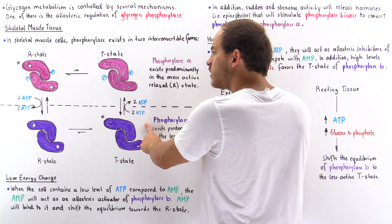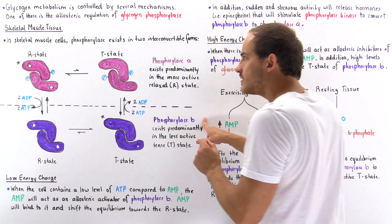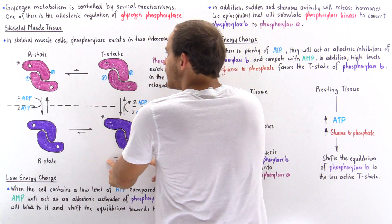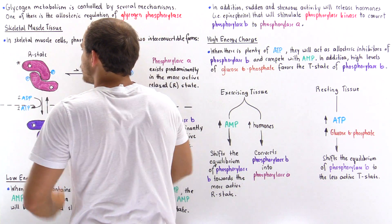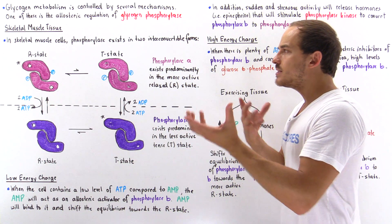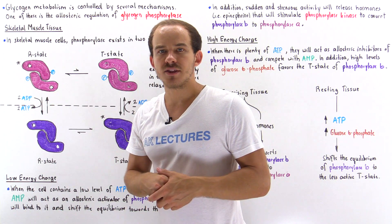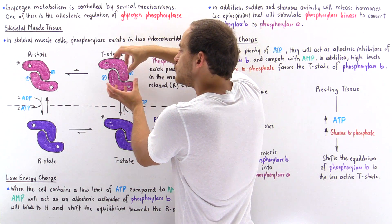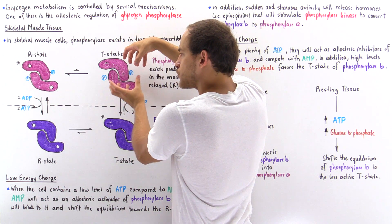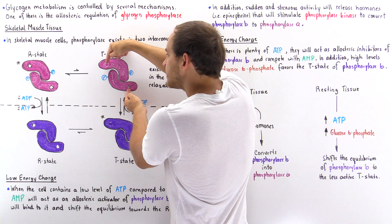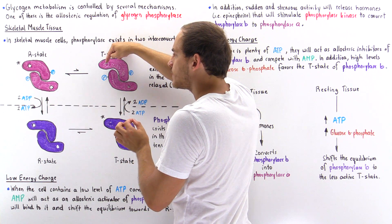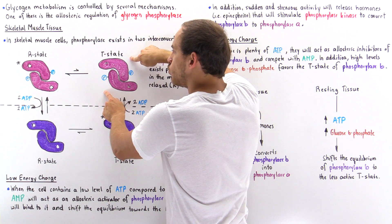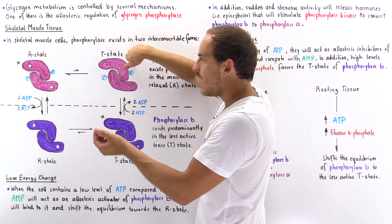Each one of these phosphorylase enzymes exists in two different states: the T state, known as the tense state, and the R state, known as the relaxed state. In the T state, as a result of the conformation of the dimer structure, the active sites of the enzyme are partially blocked, meaning the activity of the enzyme will be low.